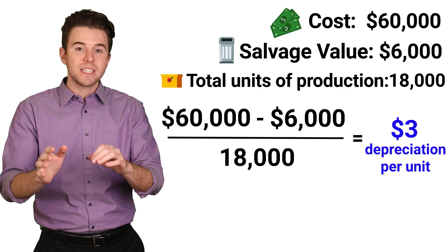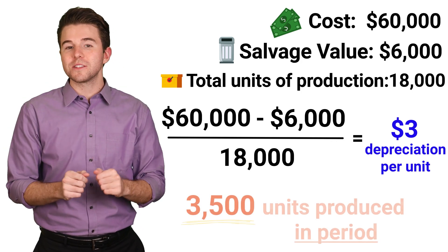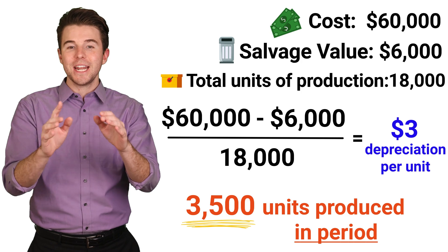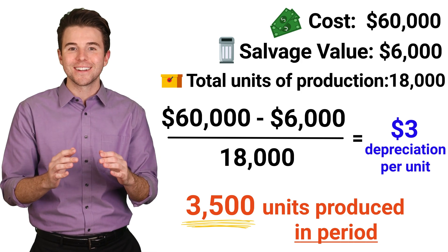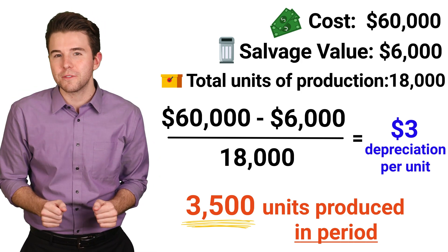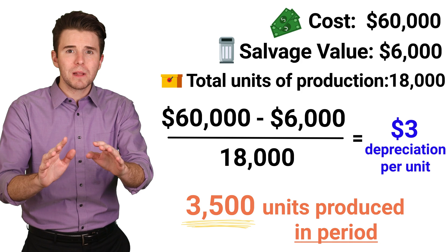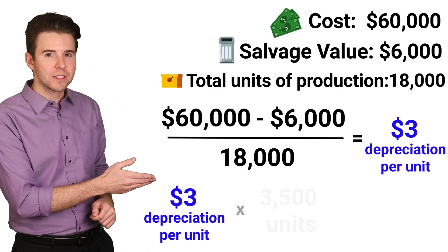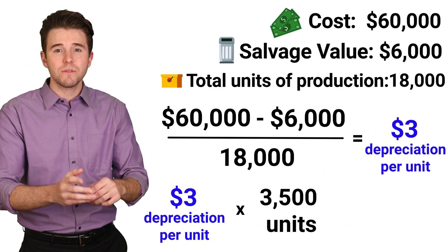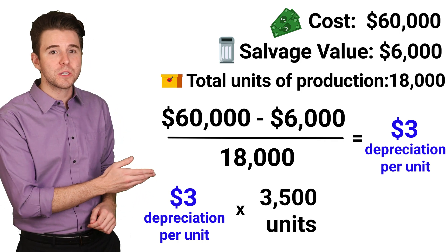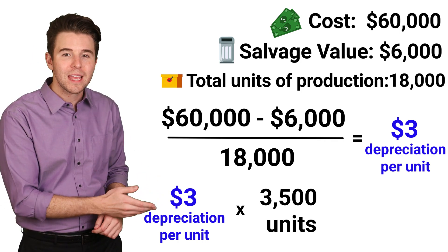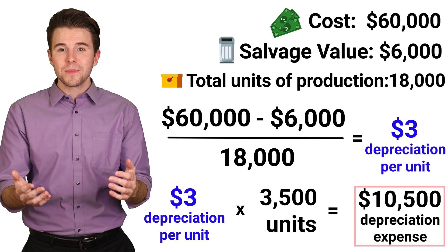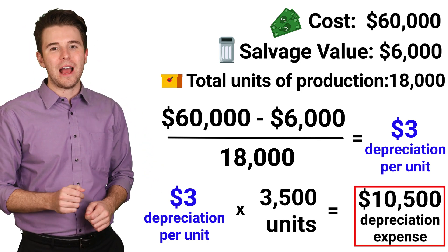Next, the company reports that 3,500 units are produced and sold in its first year. To compute depreciation for the first year, we multiply the depreciation per unit of $3 by the 3,500 units produced this year. This gives us depreciation for the first year of $10,500.